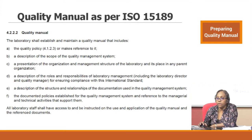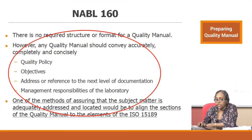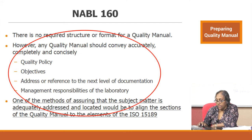Now we look at how NABL 160 addresses the requirements of a quality manual. It reiterates that there is no required structure or format for a quality manual. However, any quality manual should convey accurately, completely, and concisely the quality policy, the objectives, address or reference to the next level of documentation, and management responsibility. One method for assuring adequate coverage is to align the sections of the quality manual to the elements of the ISO standard.